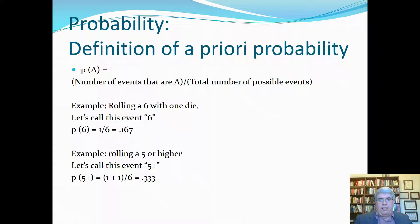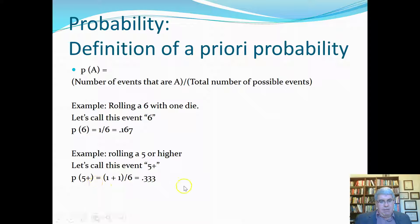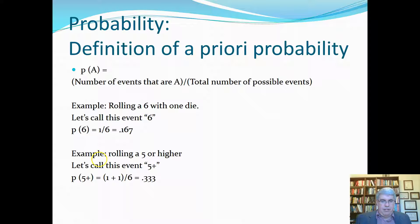Suppose we want the a priori probability of getting a 5 or higher. We call this event 5+. There are two events — a 5 and a 6 — divided by the total of 6 possible outcomes, giving 2 divided by 6 equals 0.33. So there's a 33% probability of getting a 5 or higher. That's a priori probability — calculated based on theoretical outcomes.